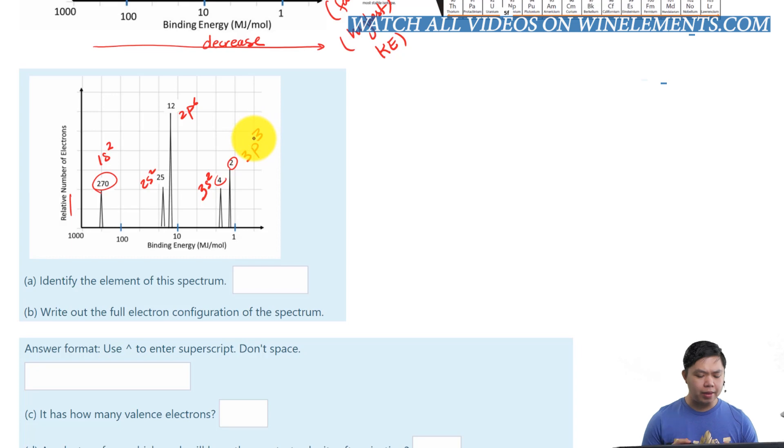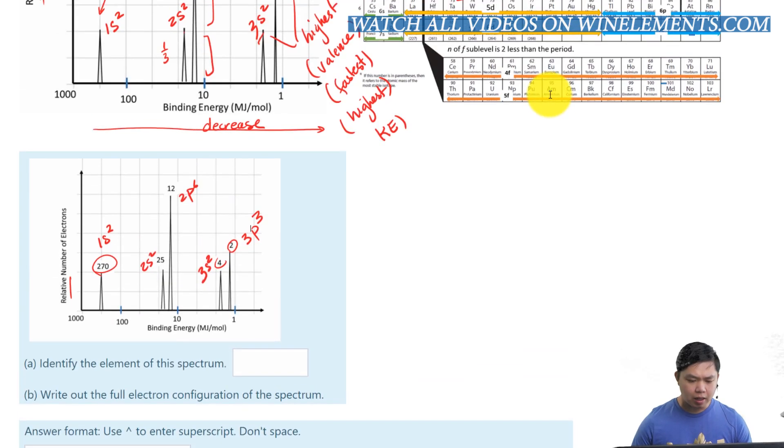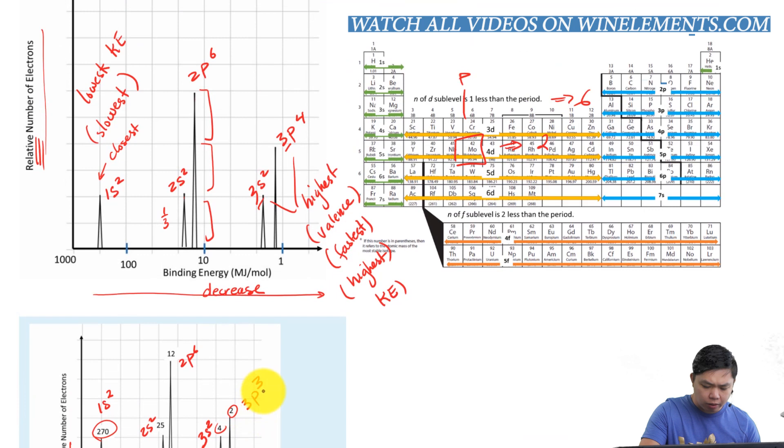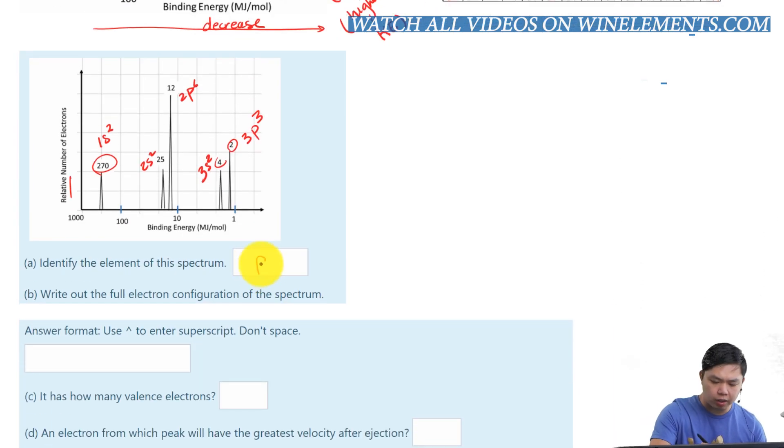by looking at this spectrum, can we identify the element? Yes. Let's look at this. 3p3, where is that? 3p3 right here. 3p123. So, the answer is phosphorus, there you go. So, phosphorus right there.